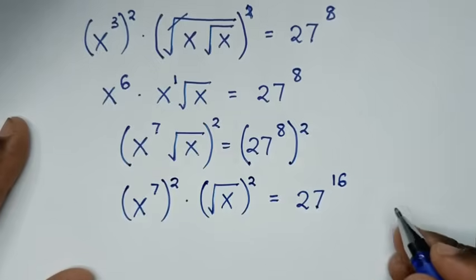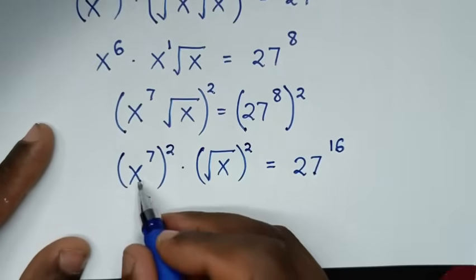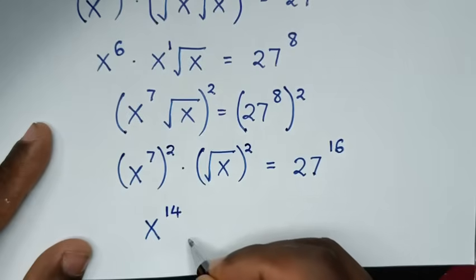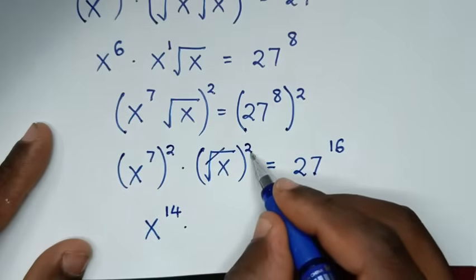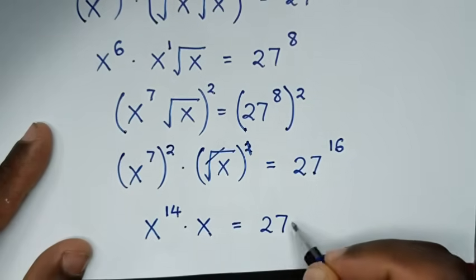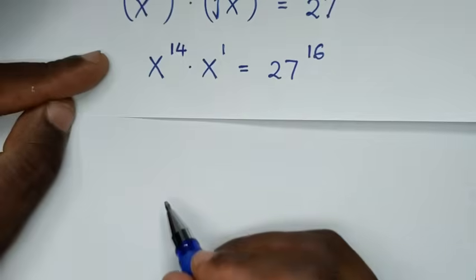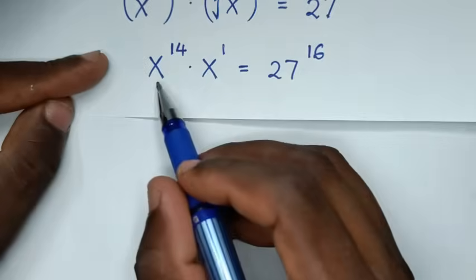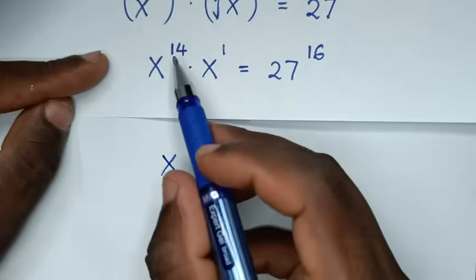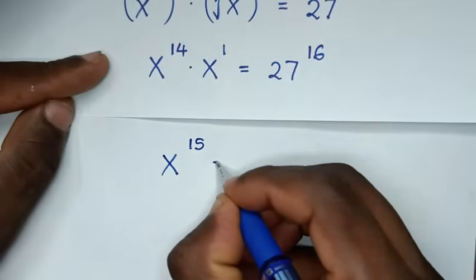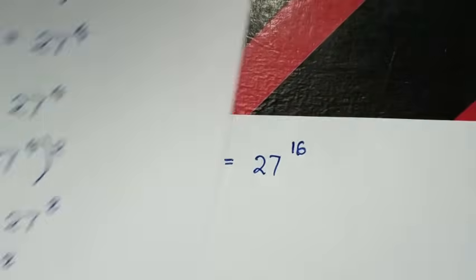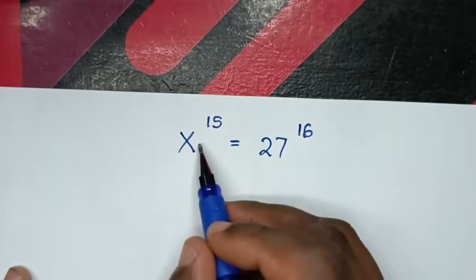Is equal to 27 to the power of 8 times power of 2, which is power of 16. Then it will be x to the power of 7 times 2, which is power of 14, times x to the power of 1 — so x to the power of 15 is equal to 27 to the power of 16.